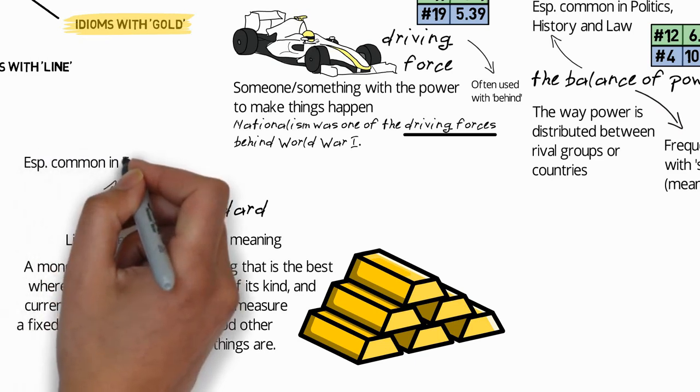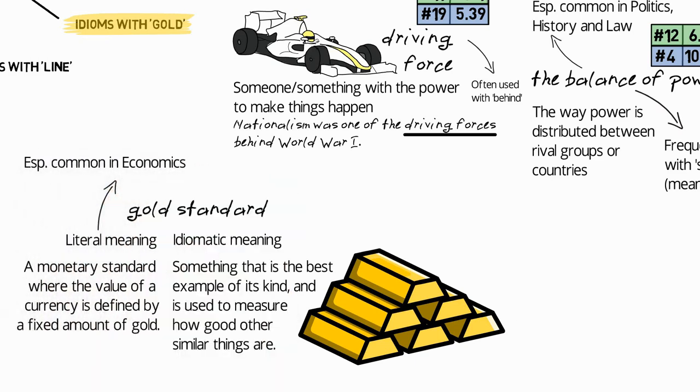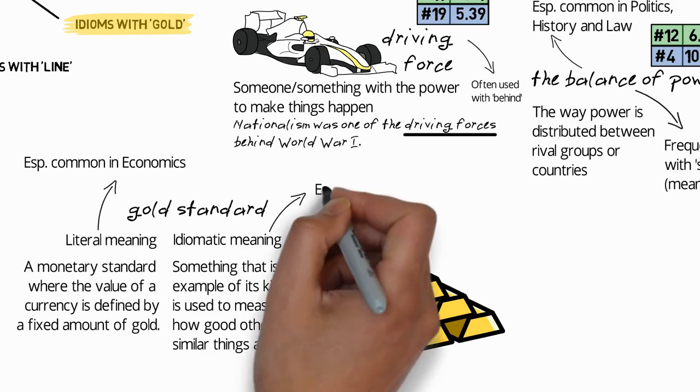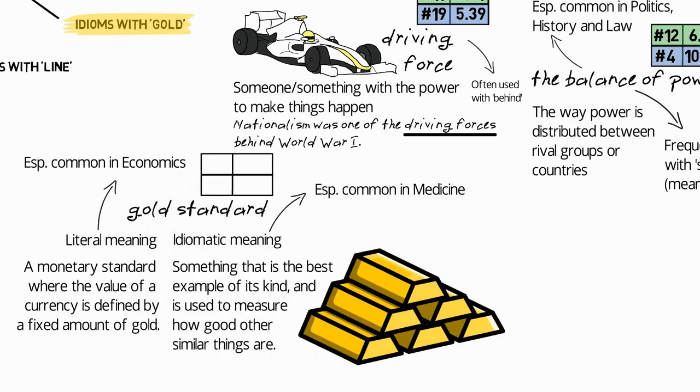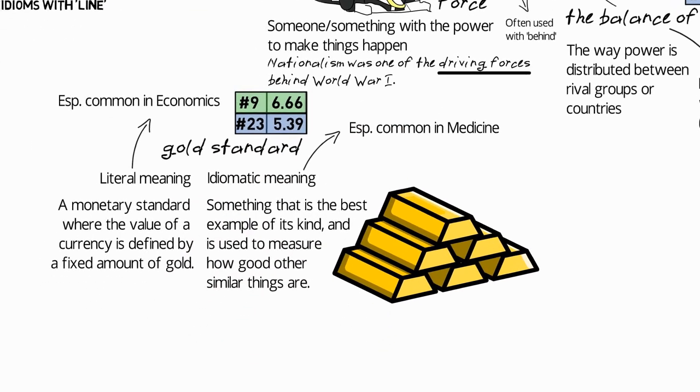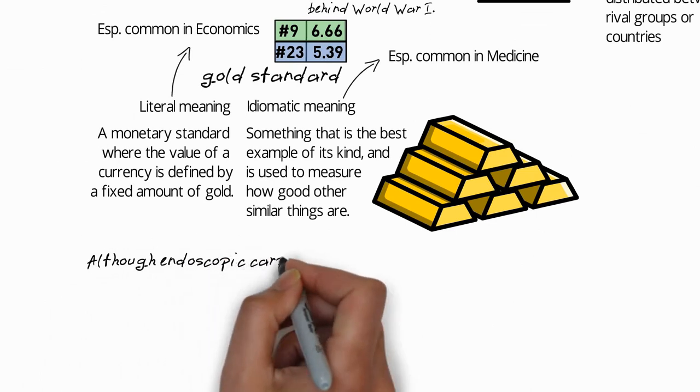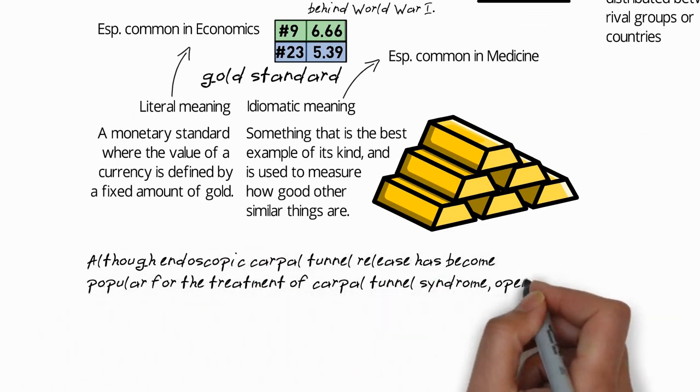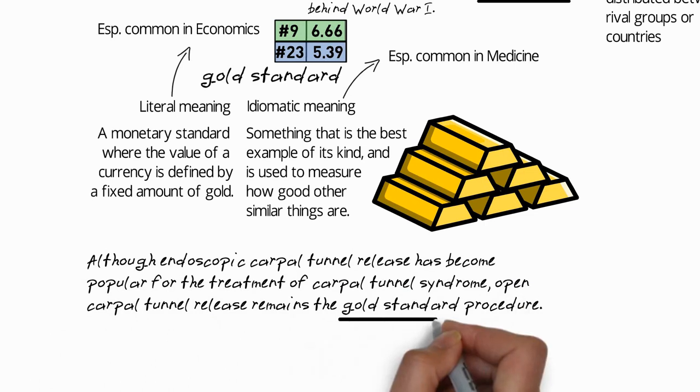So the literal meaning is especially common in economics. So if you're studying economics and you see the phrase gold standard, it's probably the literal meaning rather than used as an idiom. The idiomatic meaning is especially common in medicine, where it's used so frequently that it actually makes it the ninth most common idiom in academic English writing. For example, although endoscopic carpal tunnel release has become popular for the treatment of carpal tunnel syndrome, open carpal tunnel release remains the gold standard procedure. So that's a rather technical sentence, but what it means is although the first form is popular, the second form remains the best procedure.